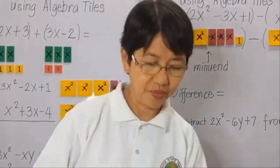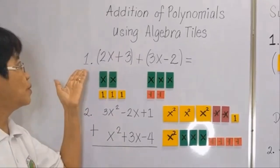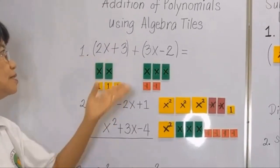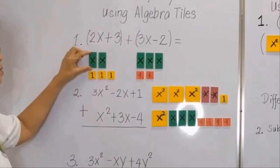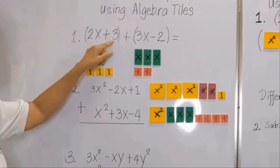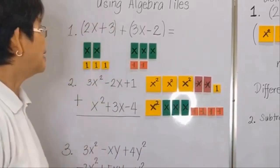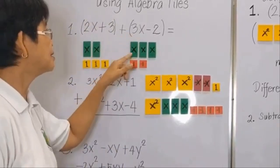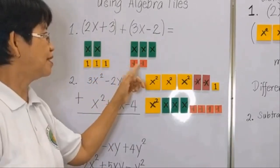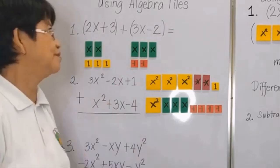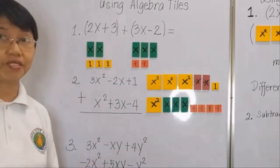So we're ready for our addition. We have 2x plus 3 plus 3x minus 2, represented by 2x's and 3 unit tiles — 1, 2, 3 — and then plus 3x. So we have negative 1 and negative 1. If we add them together, let's remember that you will only add similar terms.